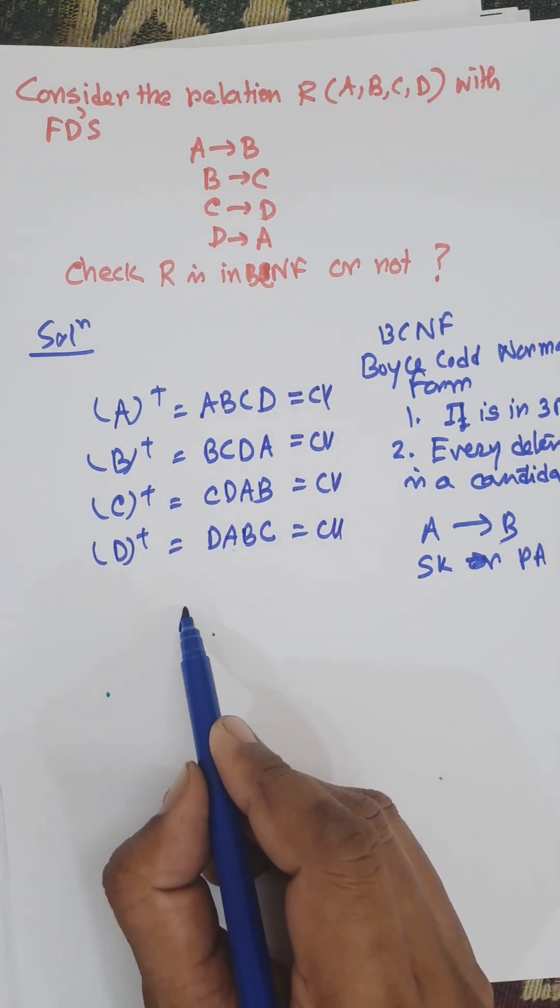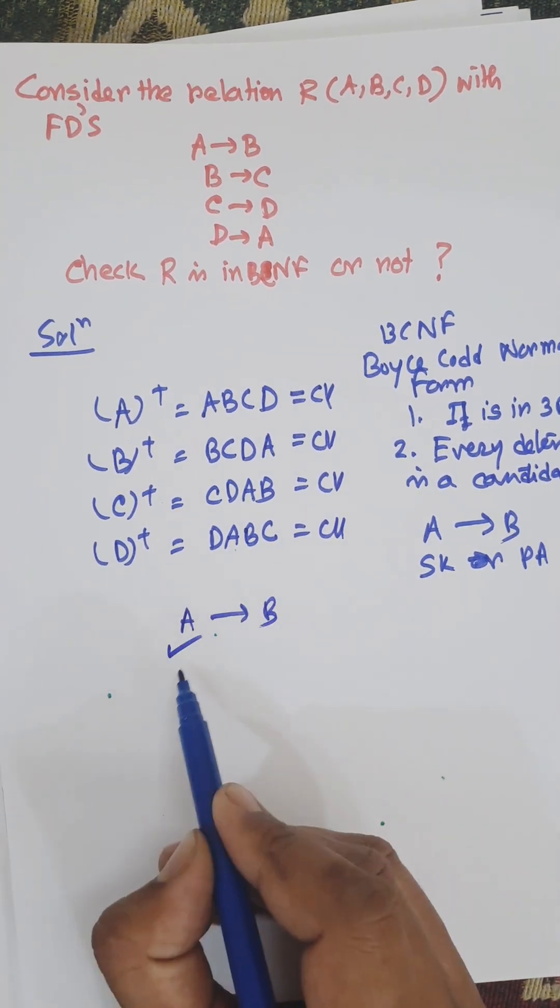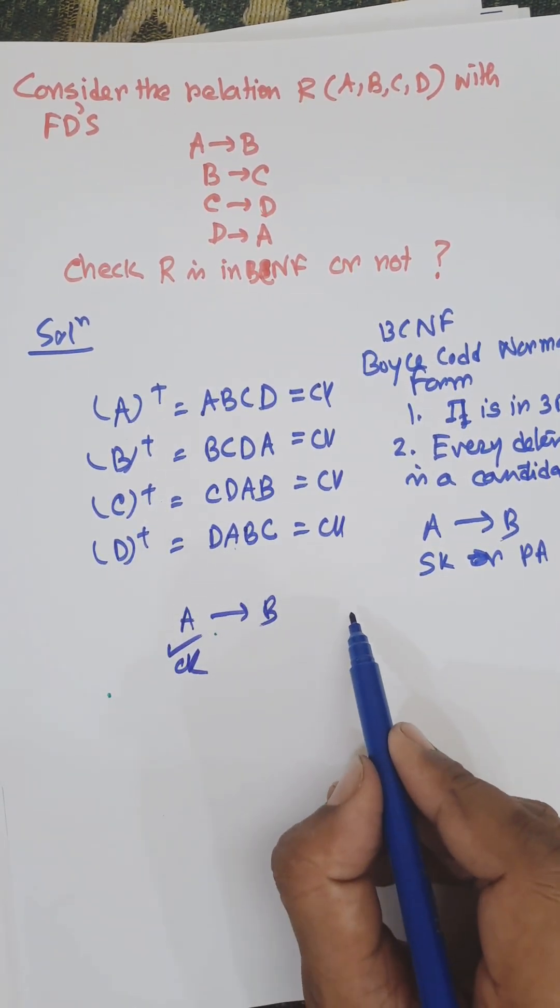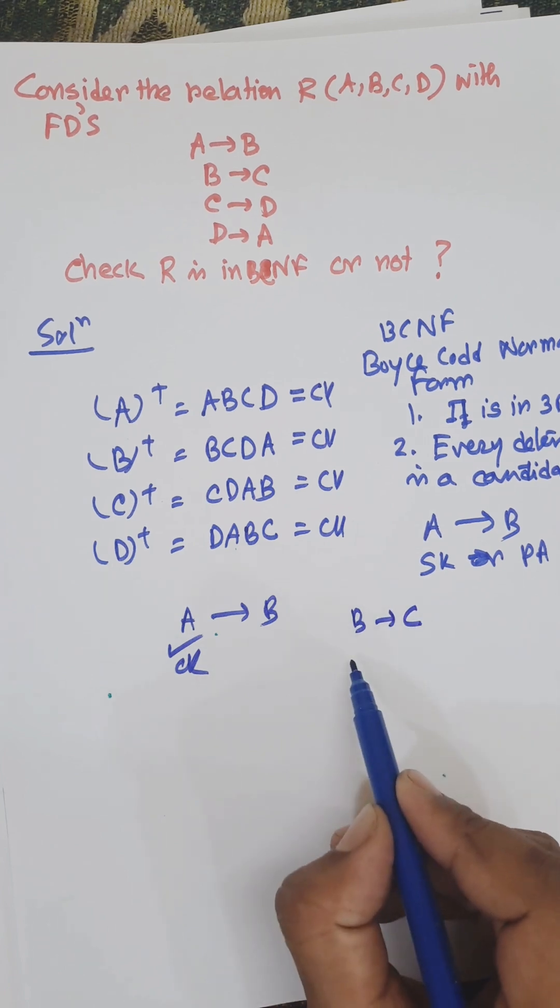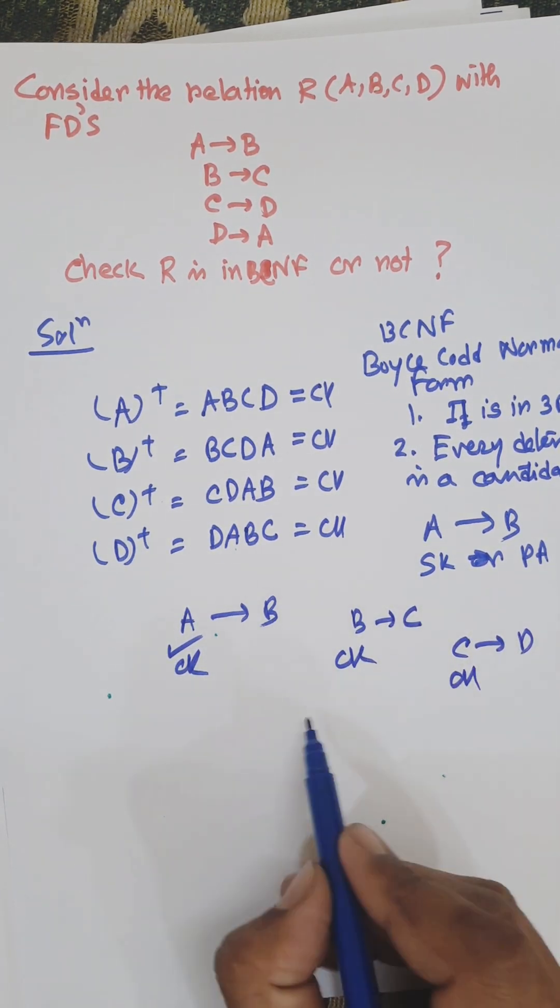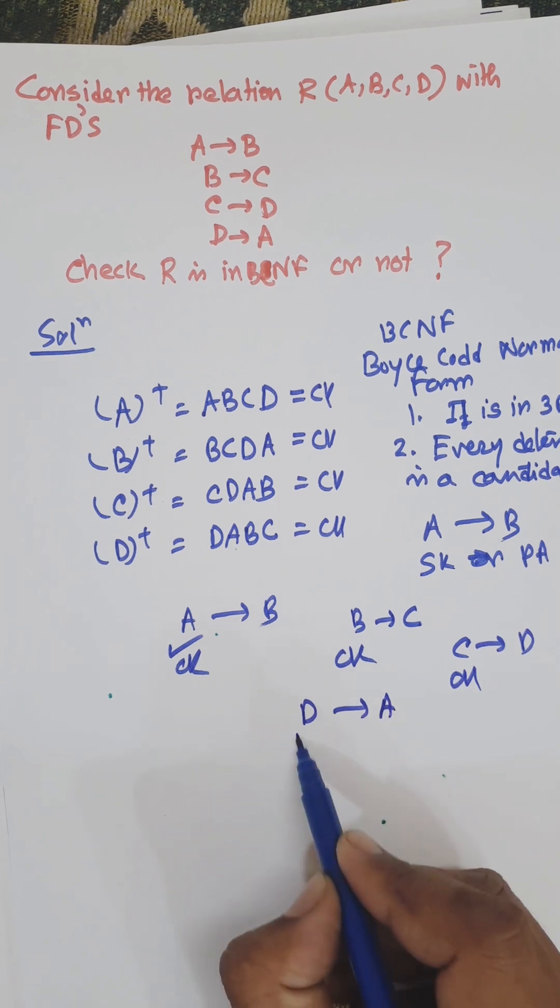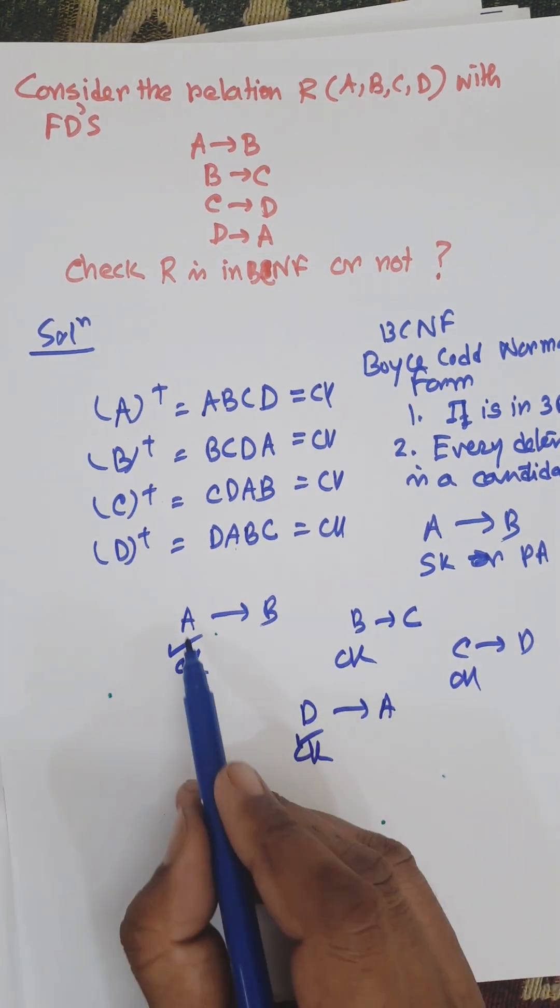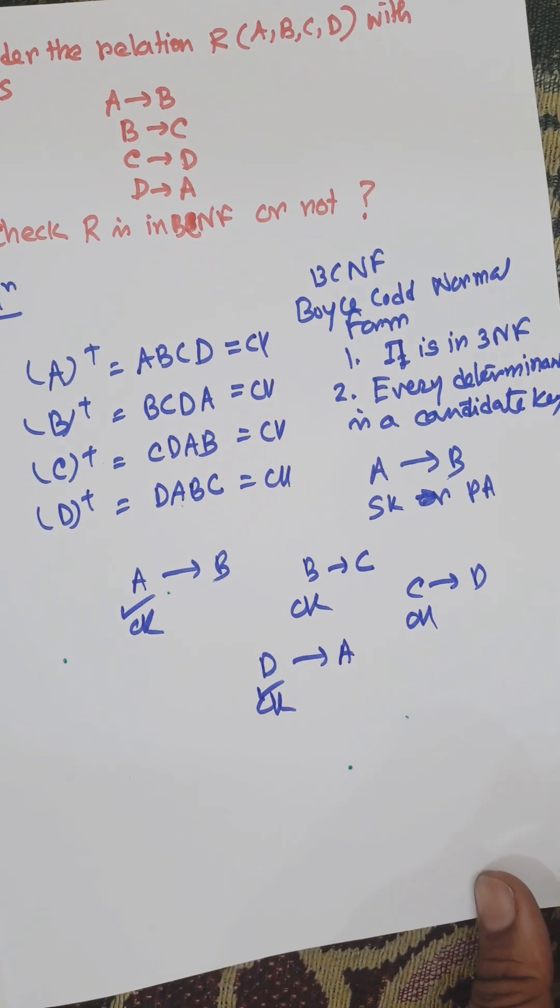For A→B, A is a candidate key. For C→D, C is a candidate key. For D→A, D is a candidate key. So every determinant is a candidate key.